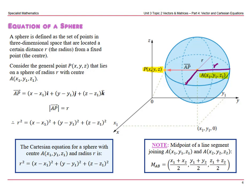Any point that we go to, we will get the radius. So what we can do is consider the radius to be a vector between the centre and the point P on the sphere. The vector would be given by the difference between the coordinates: x minus x1, y minus y1, z minus z1, and r would be the magnitude of that vector AP. So that means r squared equals x minus x1 all squared, plus y minus y1 all squared, plus z minus z1 all squared.